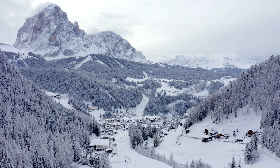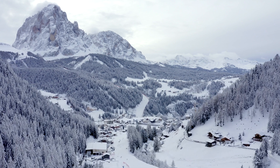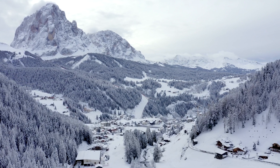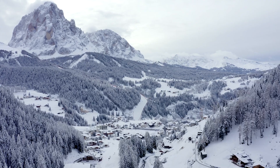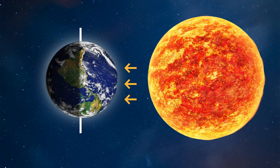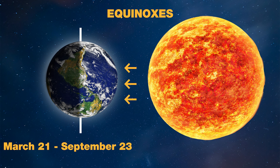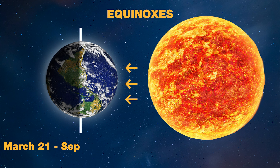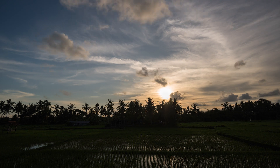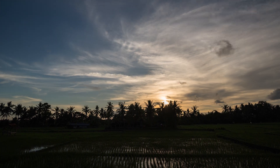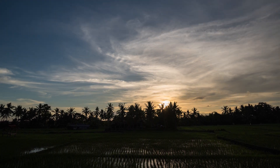There are two days in a year when the effect of axis tilt disappears. We call these equinoxes. On March 21st and September 23rd, the sun's rays fall at right angles to the equator, and the length of the day and night is equal all over the planet.